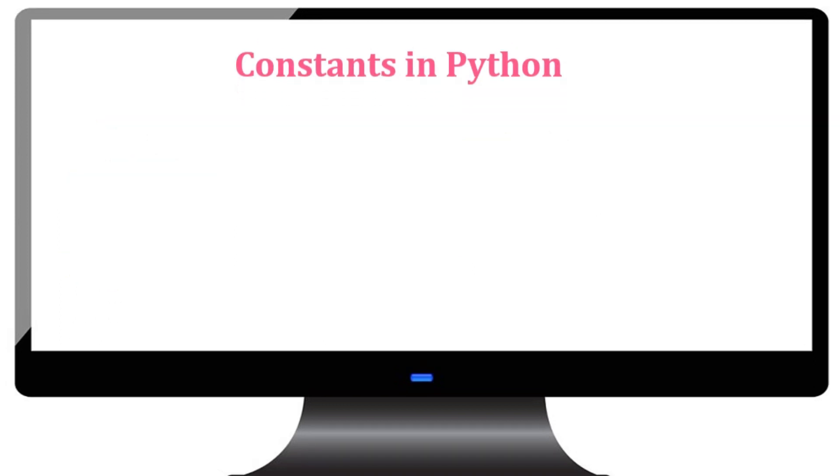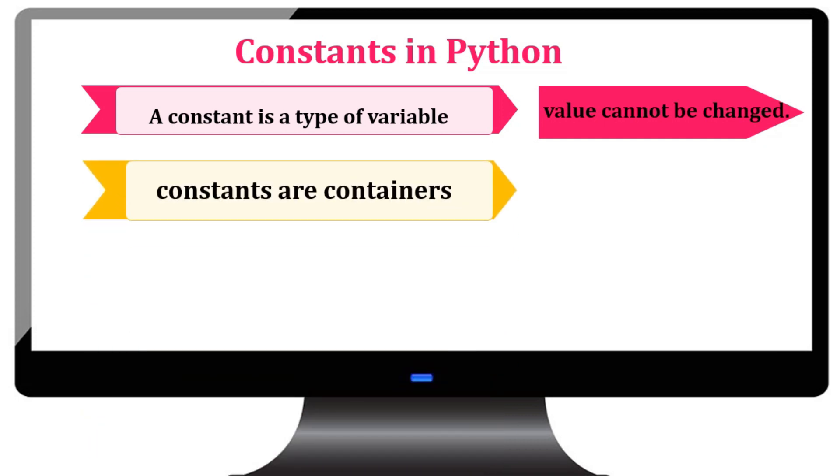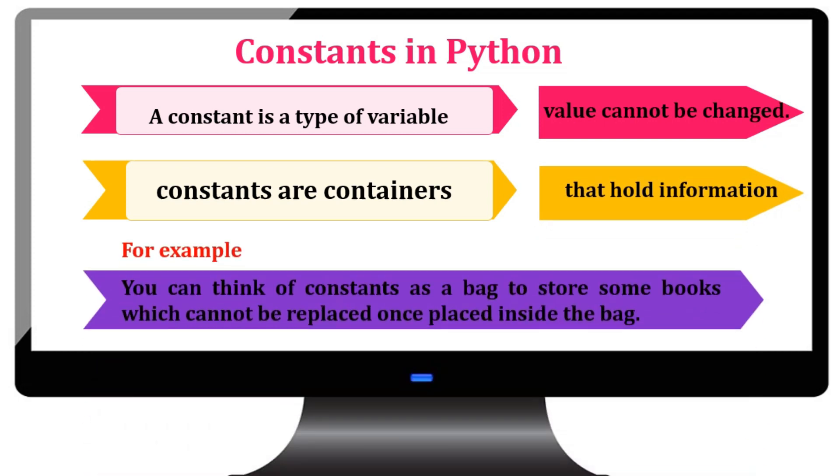Next, we will see about constants in Python. A constant is a type of variable whose value cannot be changed. It is helpful to think of constants as containers that hold information which cannot be changed later. For example, you can think of constants as a box to store some books which cannot be replaced once placed inside the bag.